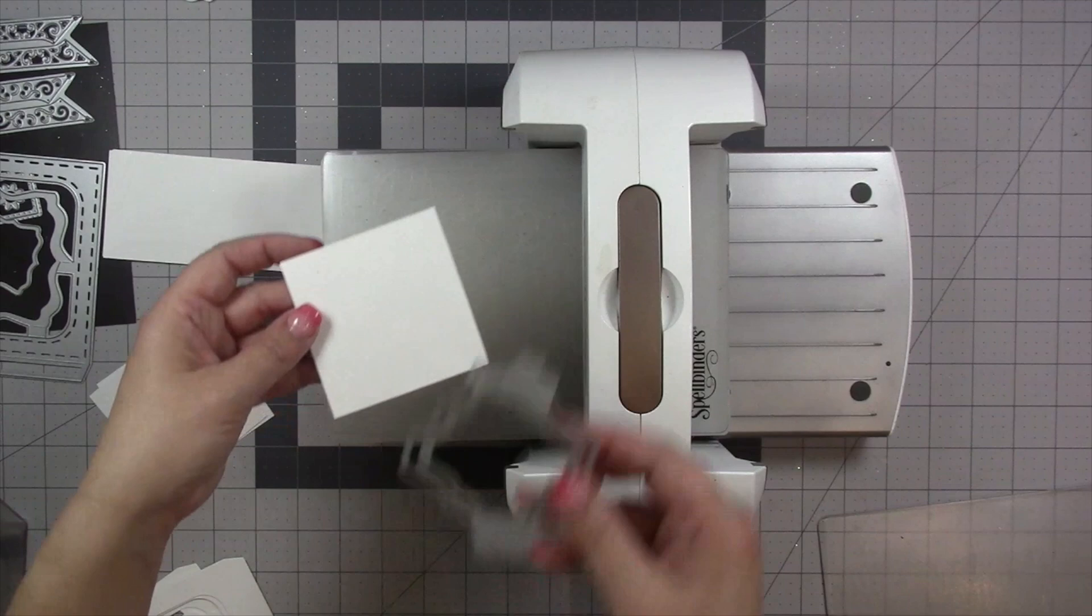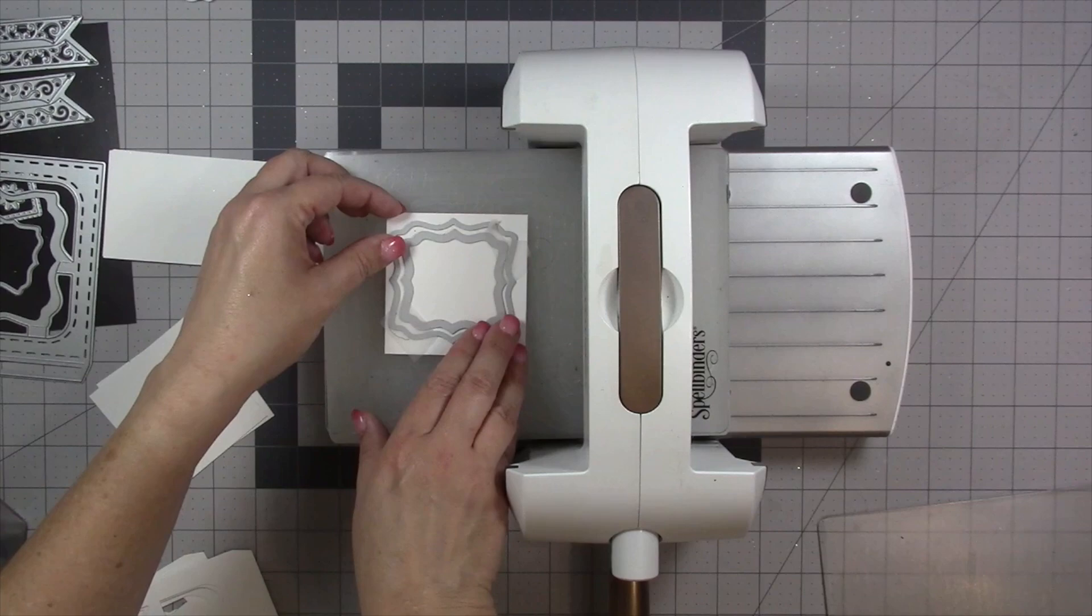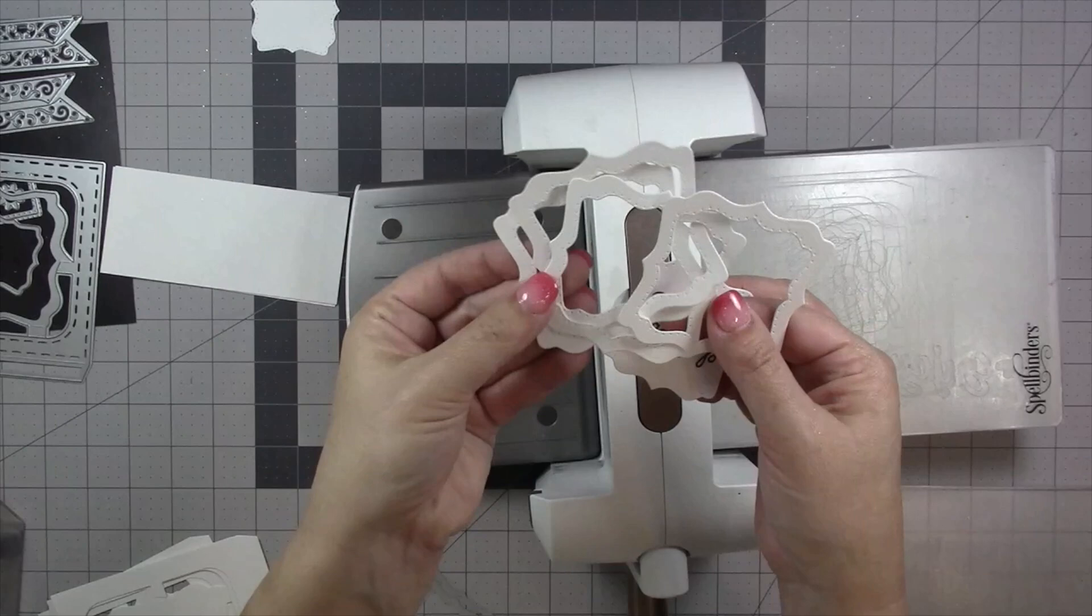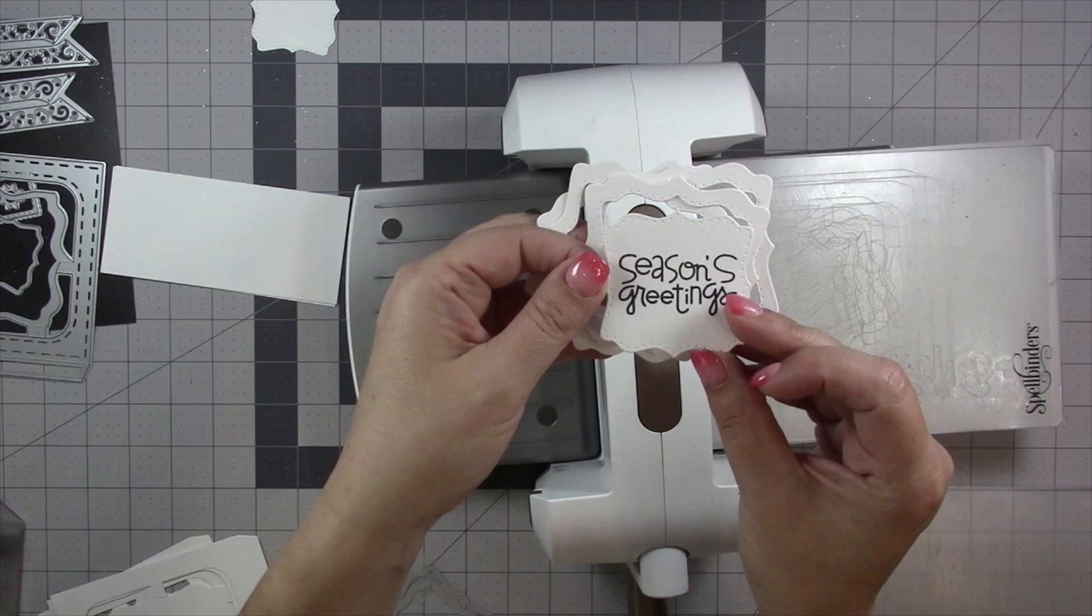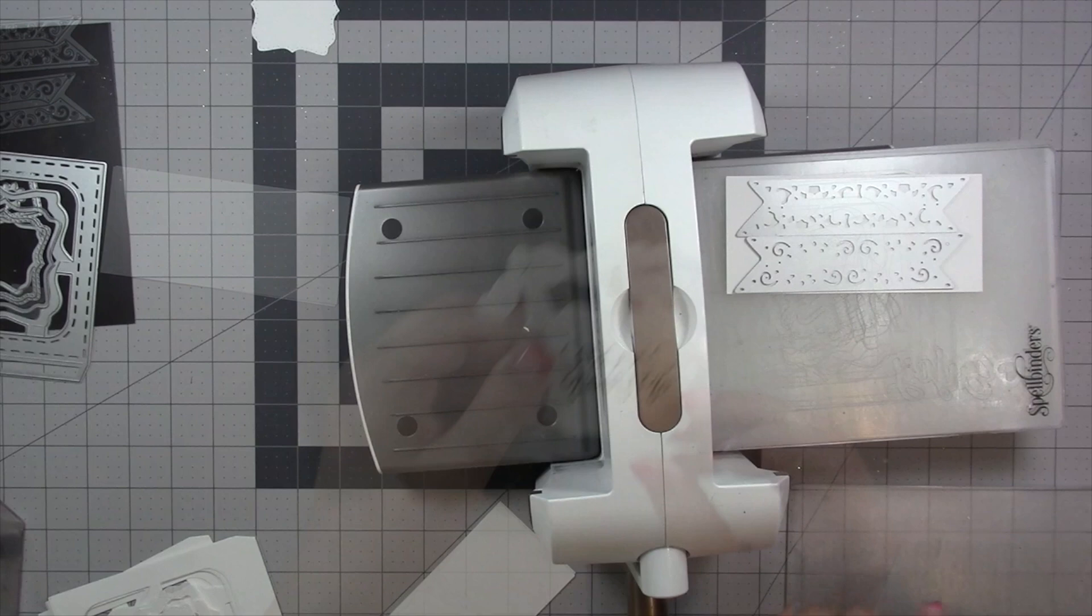Now I'm going to go to the first two decorator dies, so the biggest two decorator dies, and I'm going to nest those together. Again I'm cutting four of these frames. All of those have labels in the middle but I only need one of those and I went through my stash and found this fun seasons greeting stamp. It's an older Paper Smooches design.